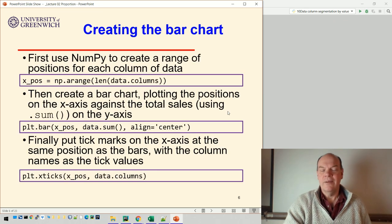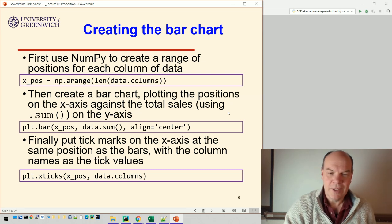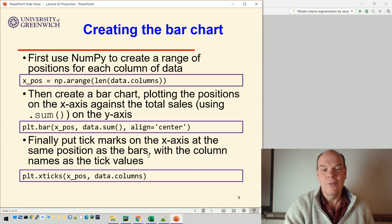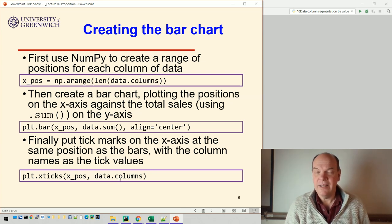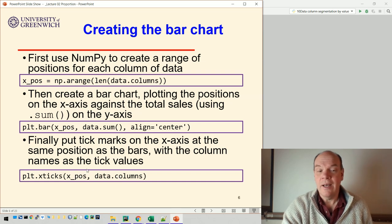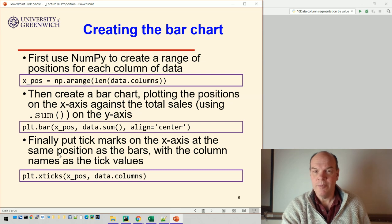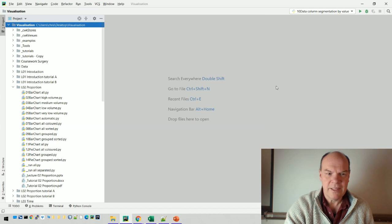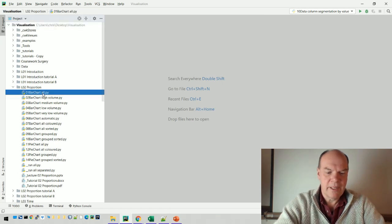And then finally, we want to tell the user which is which. So we have to just say where the values go. So data.columns is the list of column names, A, B, C, D, E, the product names in this particular case. And we put them at the same x positions, and those become the tick marks. So you can see, actually, rather than going back to the slide, let's just run it in PyCharm.